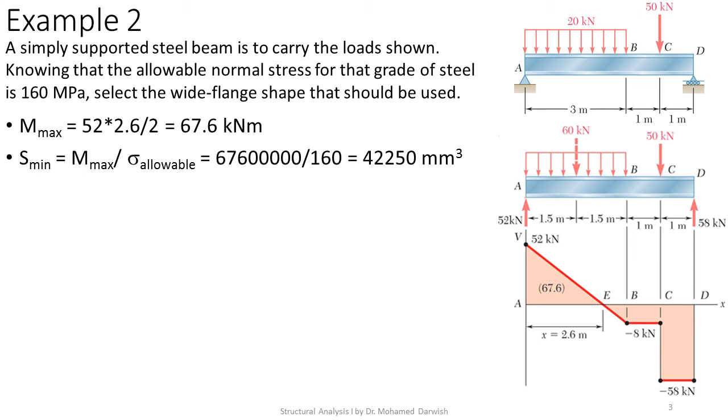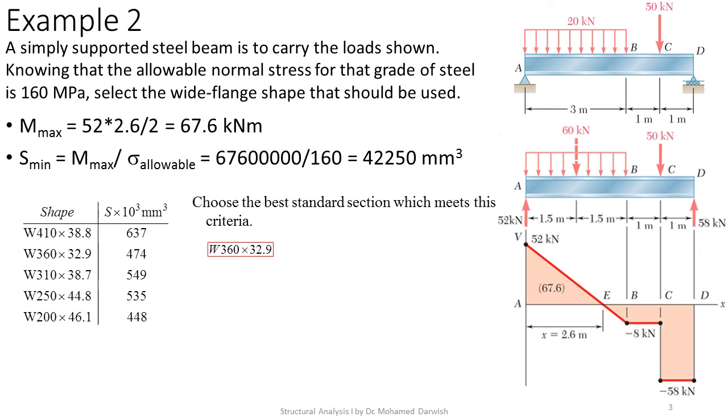Now I'll get 67.6 with 5 zeros over 160, this is equal to 42,250 mm³. We'll go to the tables of the steel sections. Steel sections have different types, they have different tables.